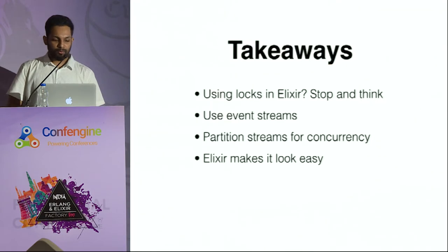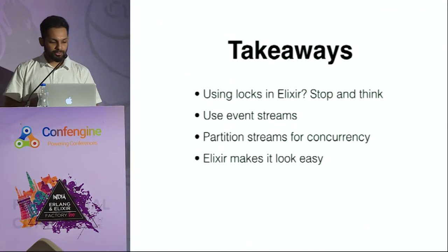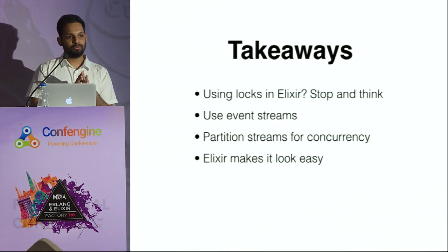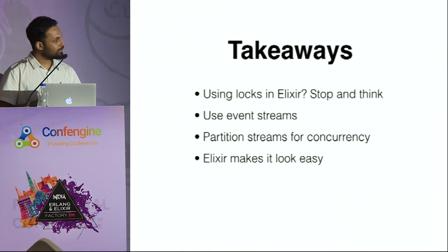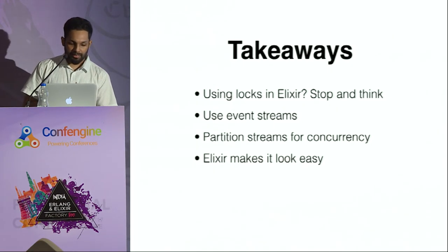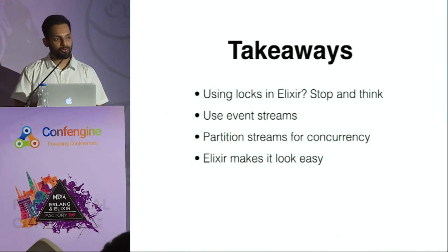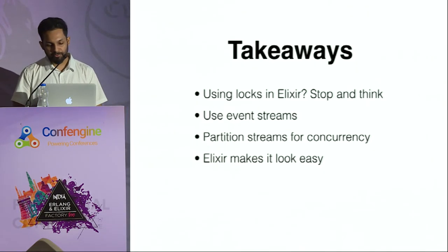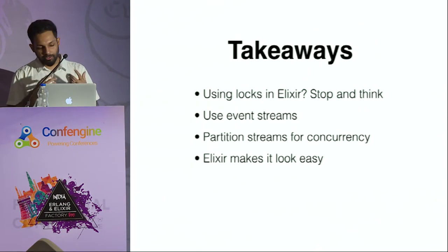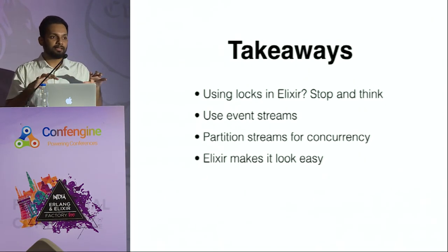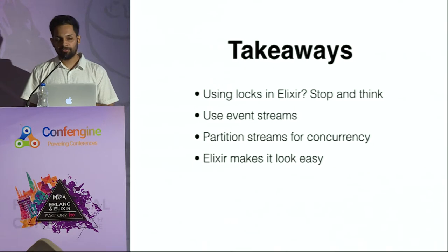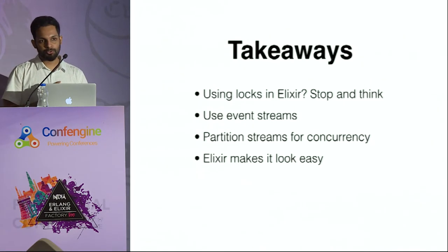The takeaways from this talk: if you're using Elixir or Erlang and you ever reach for locks, you should stop and think whether you can rewrite your algorithm using actors and message passing. Think of event streams when you have to do computations continuously, and partition these streams into multiple stages for achieving maximum concurrency. Finally, don't be afraid of concurrency - Elixir makes it easy, so use it to your advantage. Thank you.